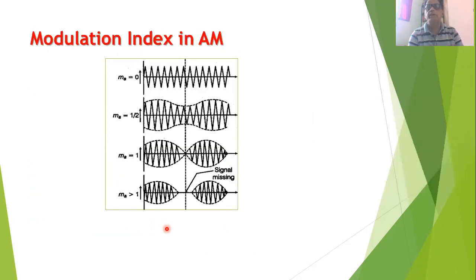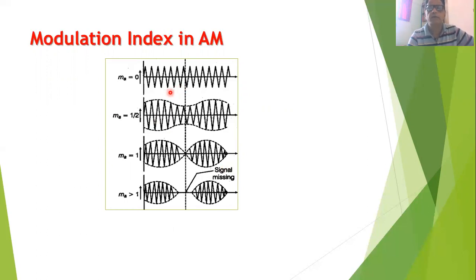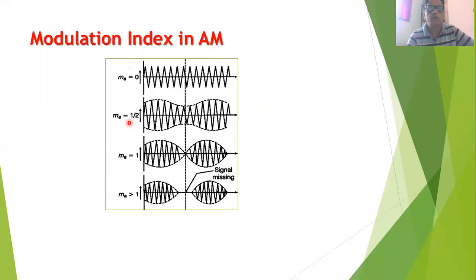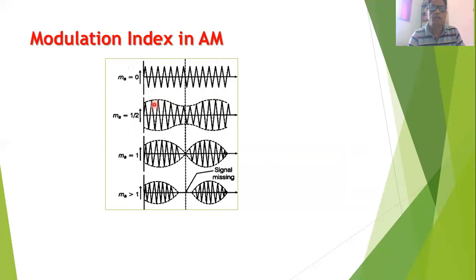These waveforms demonstrate how the shape of the amplitude modulated signal changes when the value of m_a is changed. In the first diagram, when m_a equals 0, the amplitude of the carrier signal is fixed with no variation. When m_a equals 0.5, the shape of the AM wave changes and the amplitude of the carrier signal is varied in accordance with the modulating signal.